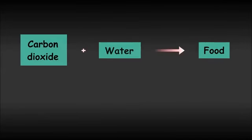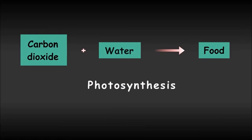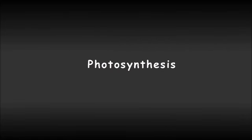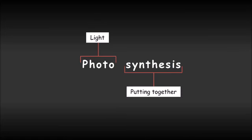The process of preparing food by plants from carbon dioxide and water using sunlight is called photosynthesis. The term photosynthesis comes from two words: photo meaning light and synthesis meaning putting together.